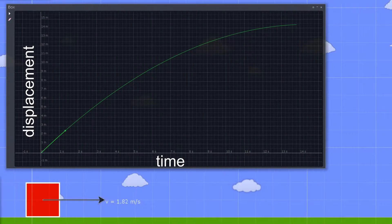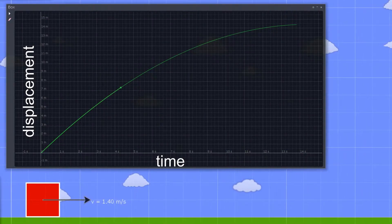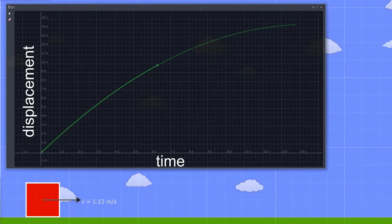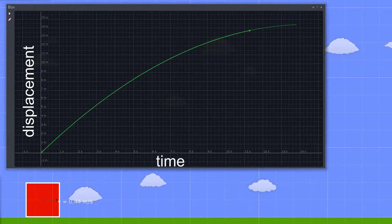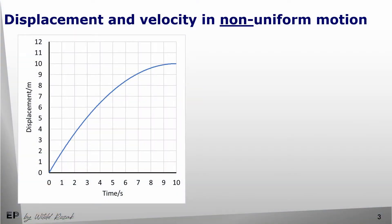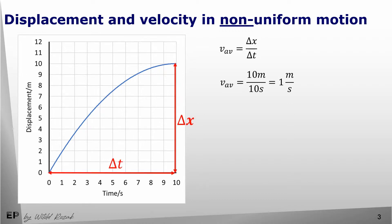Let's now have a look at another example of motion. This time we can see that as the red block moves forward its velocity decreases, and the displacement-time graph is no longer a straight line. If a displacement-time graph is not a straight line, we can still calculate the average velocity by dividing the total change in displacement by the total change in time.